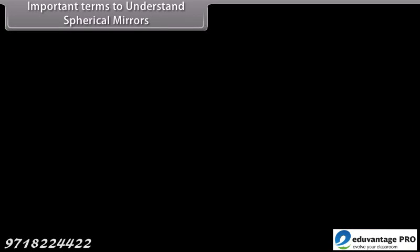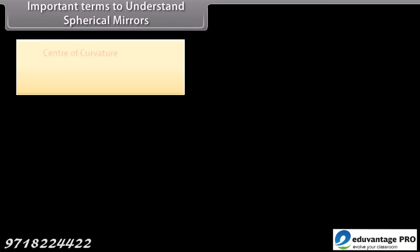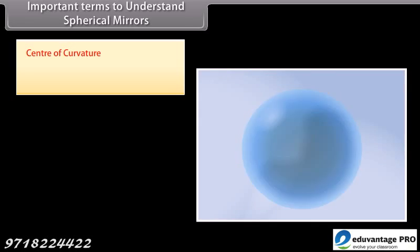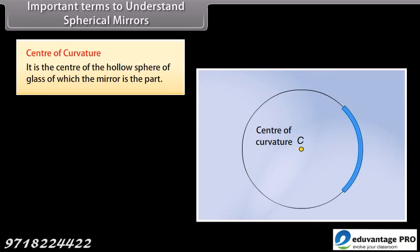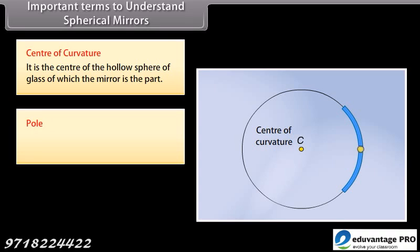Important terms to understand spherical mirrors. Center of curvature: it is the center of the hollow sphere of glass of which the mirror is a part. Pole: the center of a spherical mirror is called the pole.